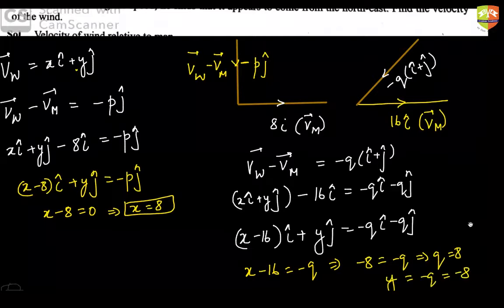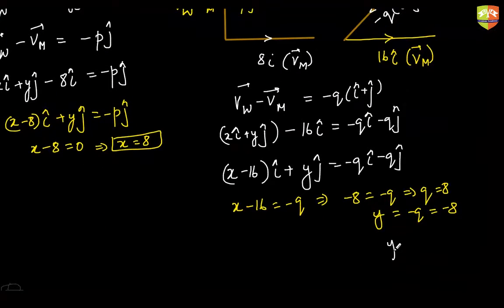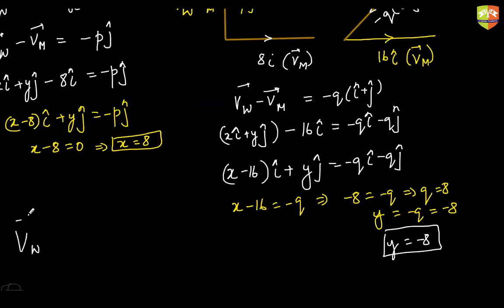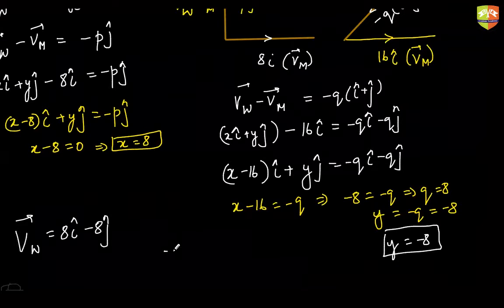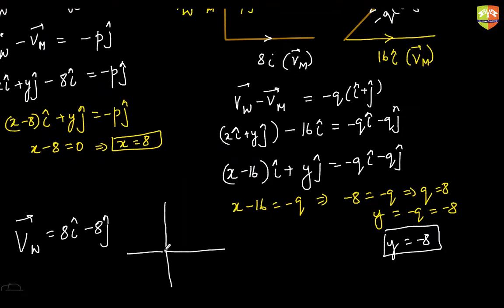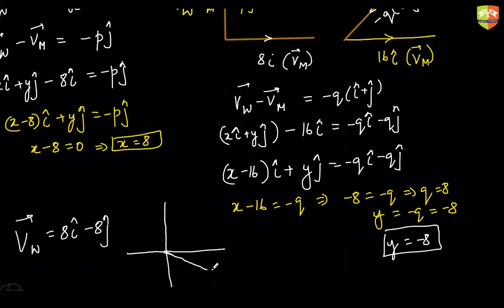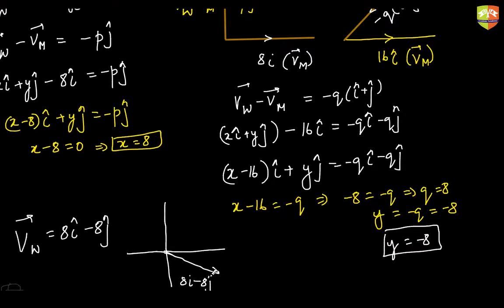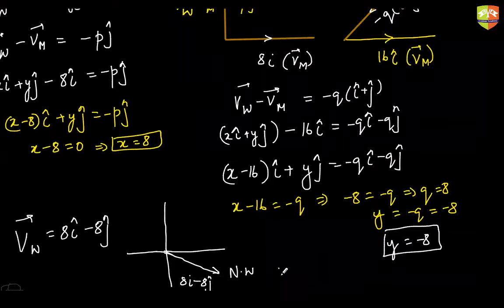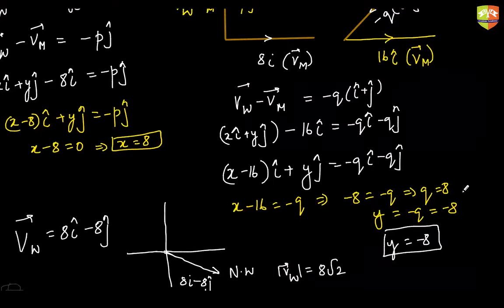So the velocity of the wind is 8i - 8j, meaning the wind is coming from the northwest. The speed of the wind — the magnitude of the velocity — is 8√2 (in whatever units apply).